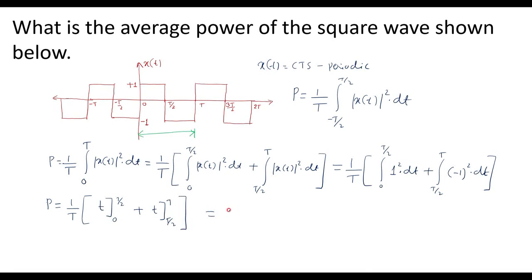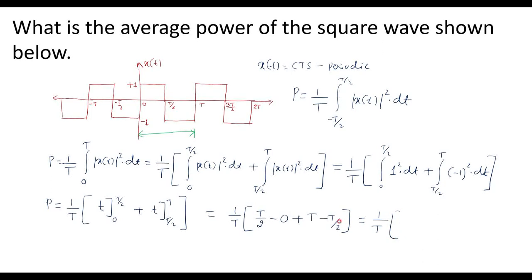Simplifying further: P = (1/T) times [(T/2 − 0) + (T − T/2)]. This gives (1/T) times [T/2 + T/2]. The T/2 terms add up to T, so P = (1/T) × T = 1. Therefore, the power of the given square wave signal x(t) is equal to 1.